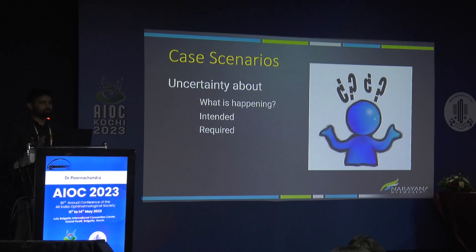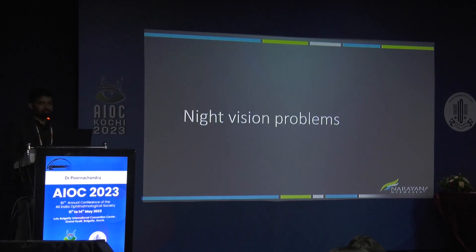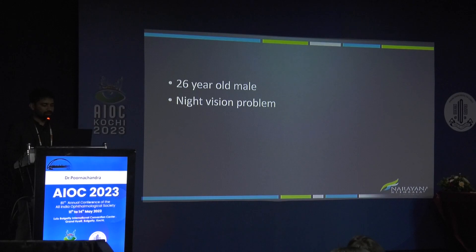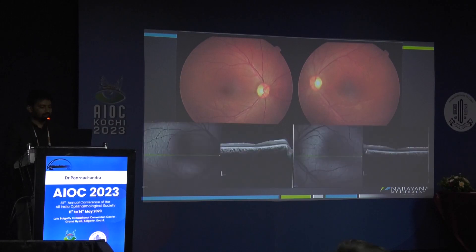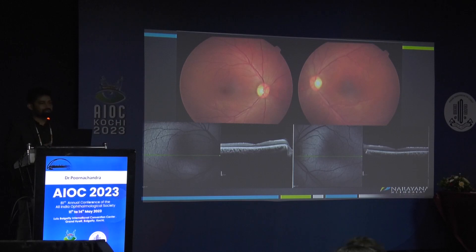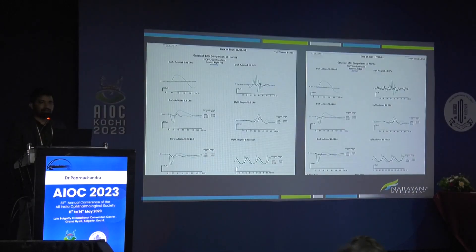Let me start with night vision problems. This was a 25-year-old male who presented with a night vision problem. Fundus and clinical examination were absolutely normal, and OCT was also normal. He was consulting multiple people. When we see this kind of presentation, we always think the patient might be malingering — that was what was suspected — and he was referred to me. When we don't understand anything, we go for electrophysiological tests, which is what I did.